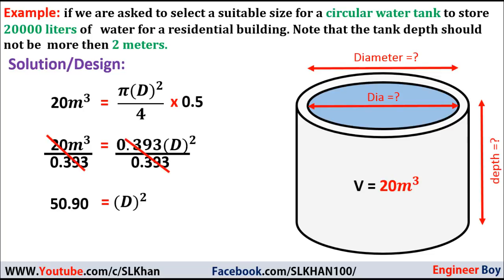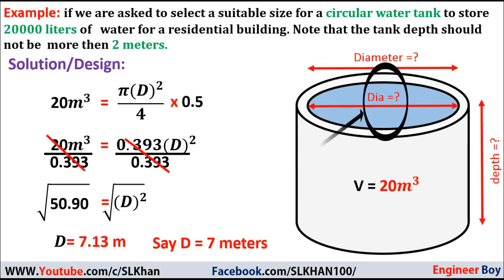Dividing both sides by 0.393, we get d² = 50.90 meters. Taking the square root on both sides, d equals 7.13 meters, or approximately 7 meters. That was our first trial.